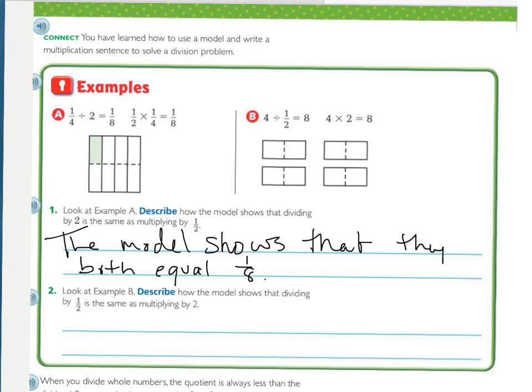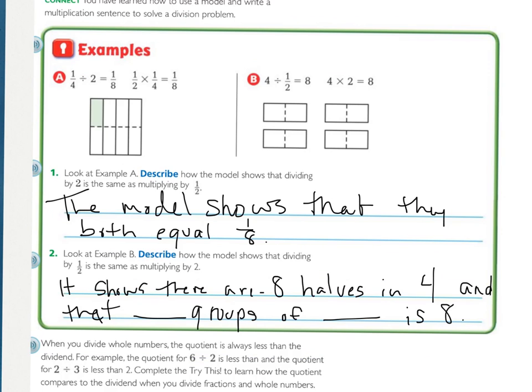For number 2, I want you to see if you can come up with another sentence. Remember that when you start with the whole number, you're forming groups of something. So in your sentence, you should probably use the term groups of, because you started with 4, and you've ended up, and you made groups of what? So press pause while you formulate your sentence. Here's the sentence from me. It shows there are 8 halves in 4, and that blank groups of blank is 8. So if you fill that in correctly, it should end up being there are 4 groups of 2 is 8.